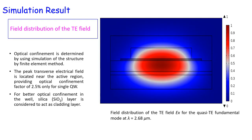In the simulation results, we see the field distribution of the transverse electric field, showing the optical confinement factor in the active region. The optical confinement factor is not very high — only 2.5% for a single quantum well.